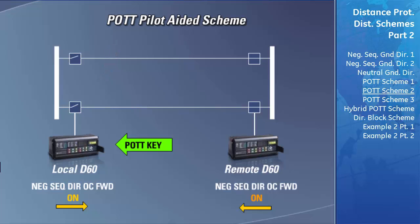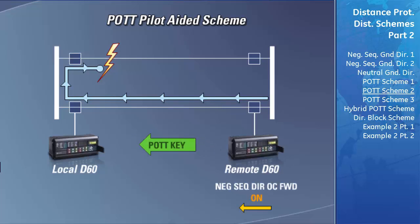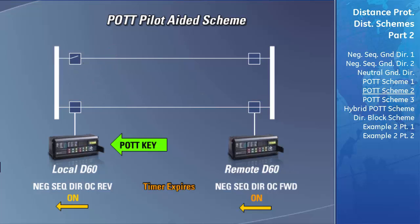To overcome this problem, the POTT scheme has additional logic to prevent this false tripping. When the local relay receives a permission to trip key from the remote D60, a timer begins to count. This timer sets the maximum amount of time that the local D60 detecting forward-flowing current will be allowed to trip the breaker. If this timer expires without the local relay detecting forward-flowing ground current, the POTT scheme will not trip the breaker if forward-flowing ground current is detected at a later time. The length of this blocking time is programmable by the user.